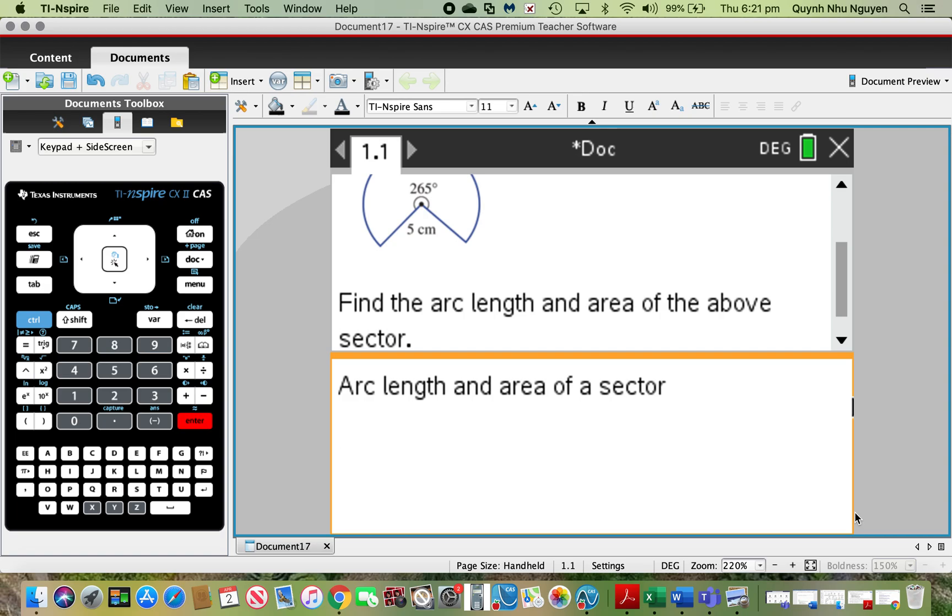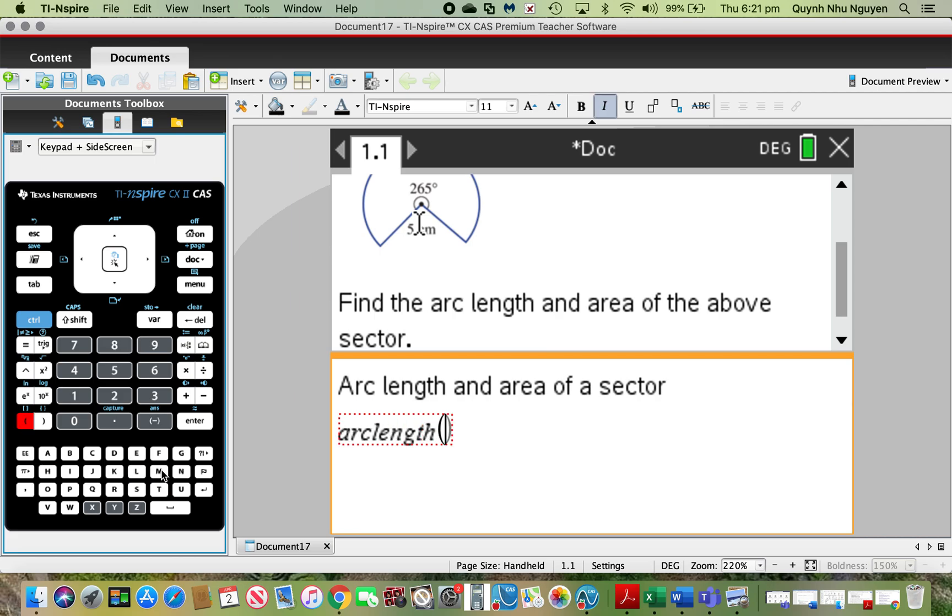First I'm going to type the general rule for arc length in terms of theta as the angle and r as the radius. Every calculation you do on a notes page must be done inside the math box. Call out the math box by pressing ctrl M and give it a name: arclength. When assigning names, you must write it as one word without any space in between.